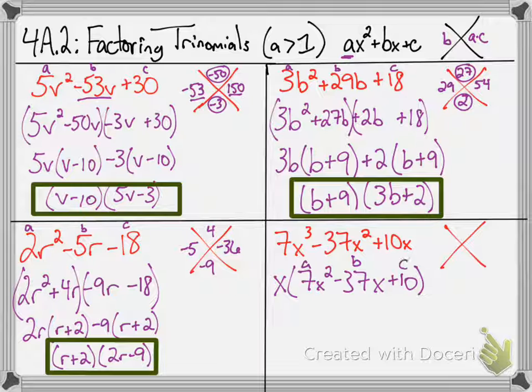So, once again, I have my ABC. My B term is negative 37. That's what we're going to try to add to. We're going to multiply the A and the C, so 7 times 10. The goal is to multiply the 70. So, two numbers that multiply to 70, add to negative 37, we're going to have negative 2 and negative 35.